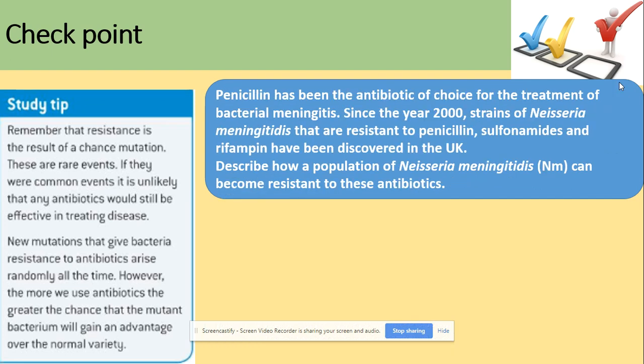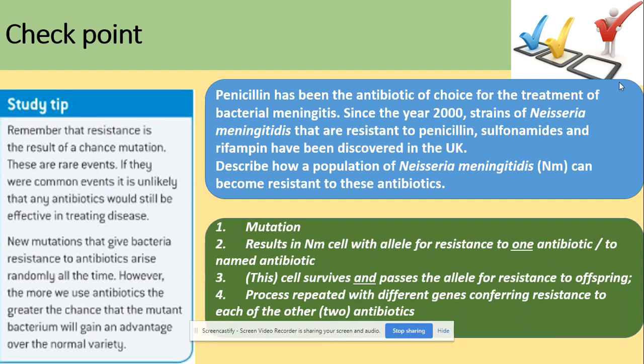Another similar question: describe how a population of bacteria can become resistant to antibiotics. A mutation results in a bacterial cell with an allele for resistance to the antibiotic. This cell survives and passes on the allele for resistance to offspring in subsequent generations. The process is repeated with different genes and the information about resistance is passed on to each generation.